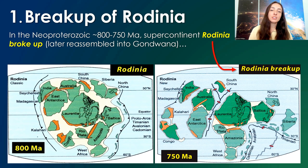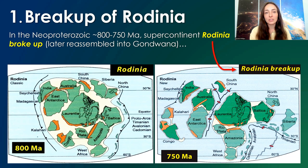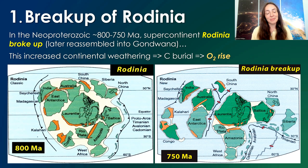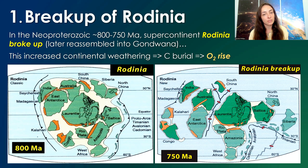The first example of a major tectonic event that caused a major climate change event in Earth's history is way back early on Earth, around 800 to 750 million years ago, when the supercontinent Rodinia broke up. This caused major climate change because it greatly increased the rate of continental weathering, which increases the rates of carbon burial, causing major cooling because it decreases the amount of atmospheric carbon available and increases oxygen — causing cooling in association with oxygenation events.